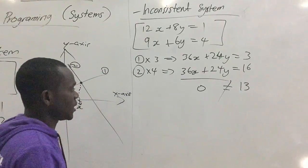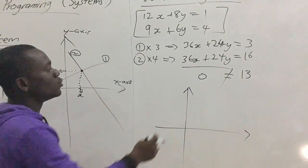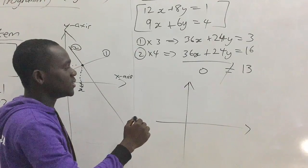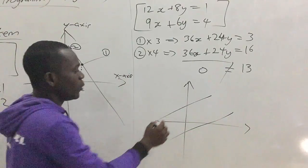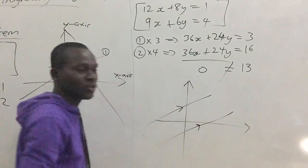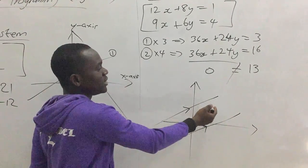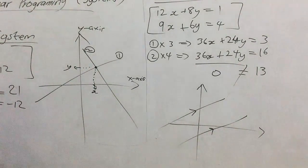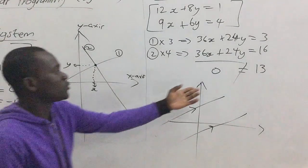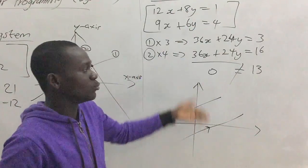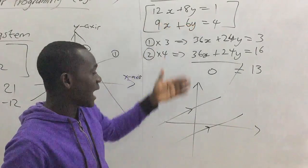To represent this graphically, the reason there is an inconsistent solution is that those two lines or equations are parallel to each other. There is no way they will meet, so since they have no intersection or meeting point, we cannot trace our x and y values as we did for the consistent system. Since 0 is not equal to 13, this system cannot be solved because the equations form parallel lines that never meet.